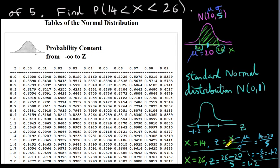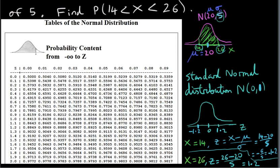We do the same for X equals 26. The transformation is Z equals X minus mu over sigma. So we have 26 minus 20 — the distance is 6 — and how many standard deviations is 26 from 20? We divide by the standard deviation, which is 5, and we get 1.2. So our original problem of finding this area is now equivalent to finding the area between minus 1.2 and plus 1.2 on our standard normal distribution.